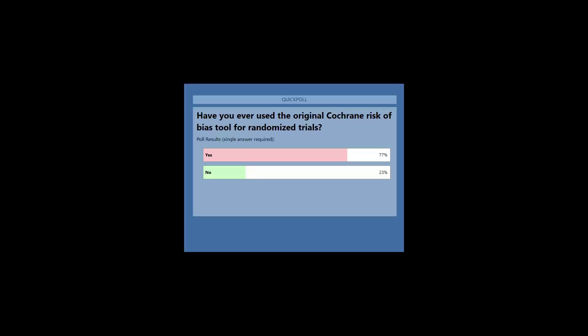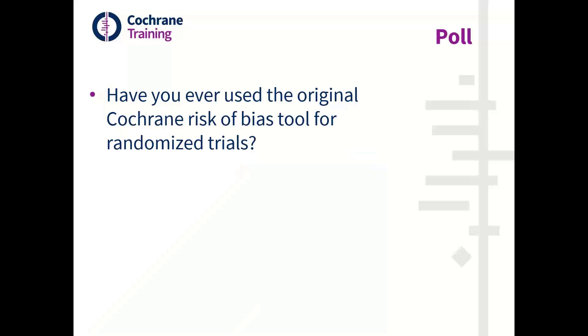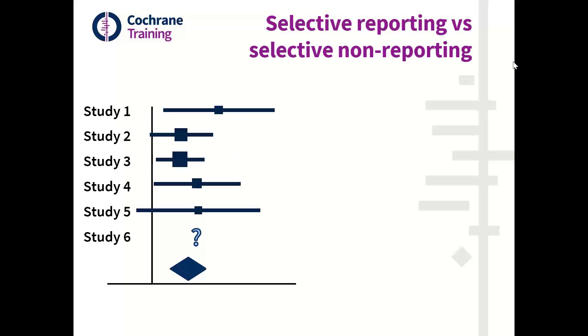Okay, let's close and share the results. 77% said yes, they have used the original Cochrane risk of bias tool. That's very helpful, mainly because this domain represents quite a significant deviation from the previous Cochrane tool. It's helpful to know that a large majority of you have used the previous version, and I'll explain how it has differed.